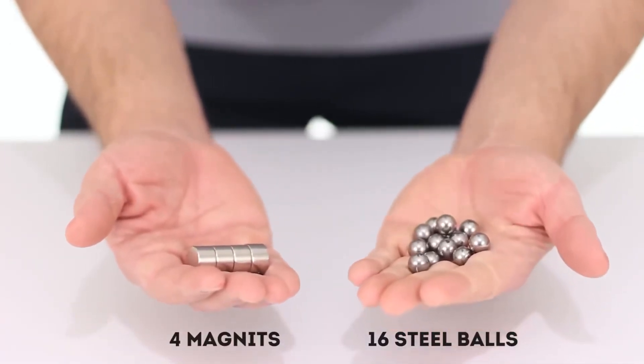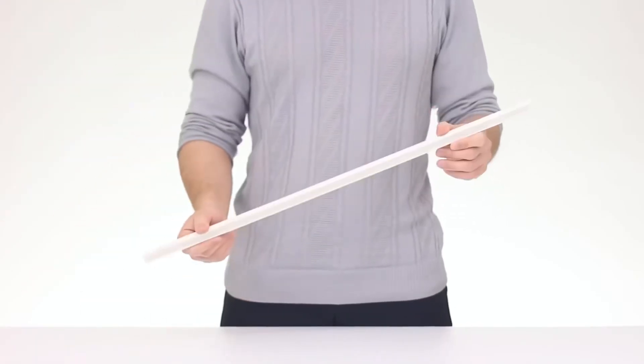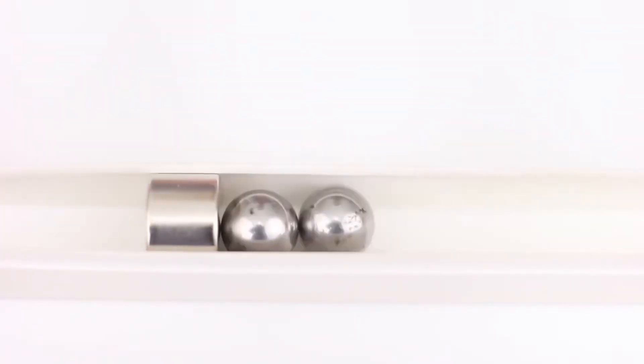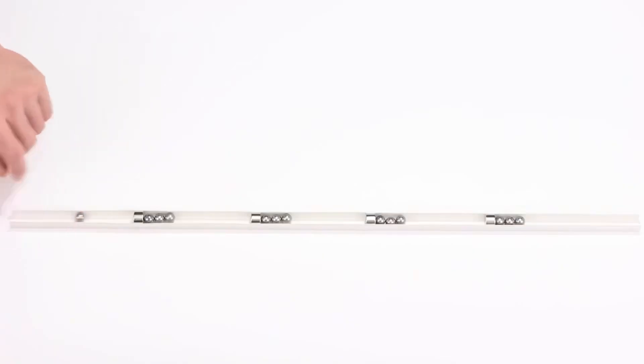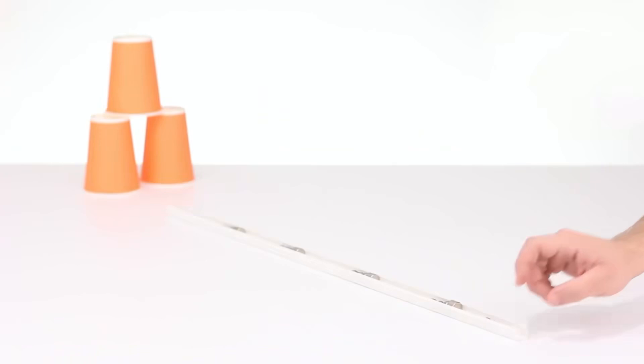Let's take four magnets and 16 steel balls. Now we'll open up the plastic baseboard and place them inside as follows. Push a lonely ball to the nearest magnet and bam! All the balls have changed their position. And the extreme one flew out the baseboard at a decent speed. This is a real magnetic rifle.